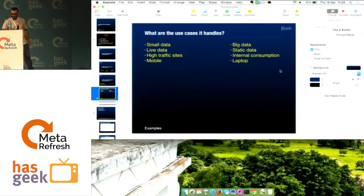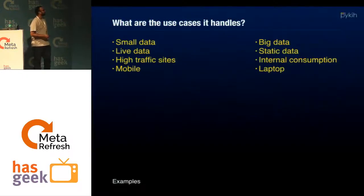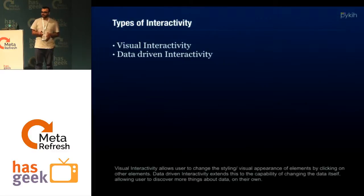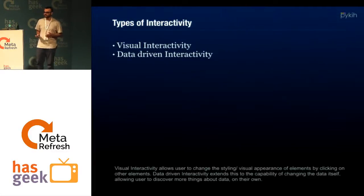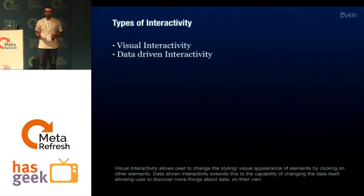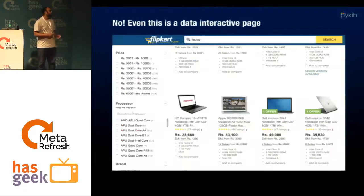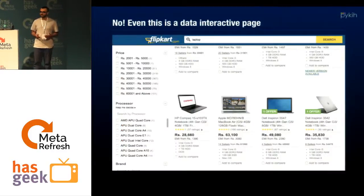PyQuery handles both these use cases. It can be used for mobile front-ends or laptop front-ends, internal consumption or high-traffic sites. There are two types of interactivity: visual interactivity — clicking one DOM element changes the visual properties of another (hide, show, etc.) — and data interactivity, where clicking one DOM element changes the data behind it. Data interactivity is not only for visualizations; it's also for consumer-facing sites like the Flipkart search page, where you click a filter in the sidebar and the data in the center changes.